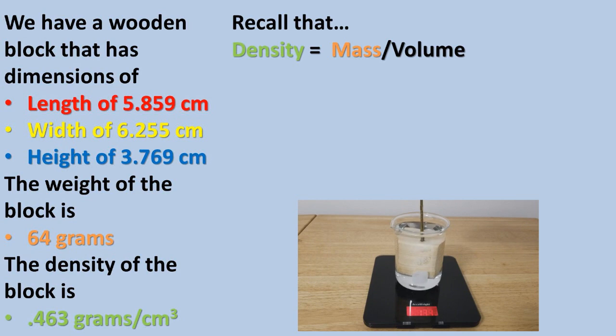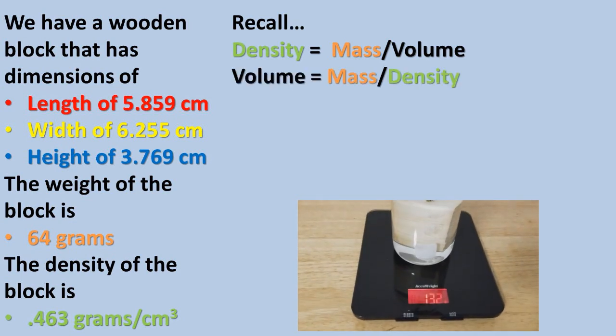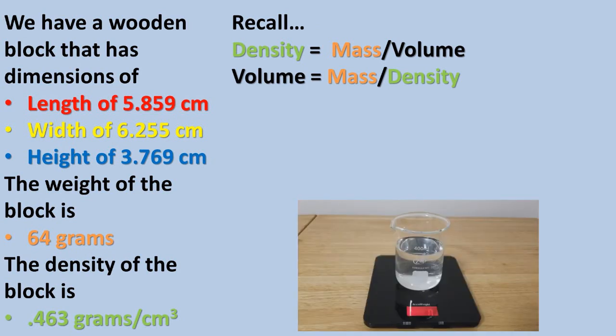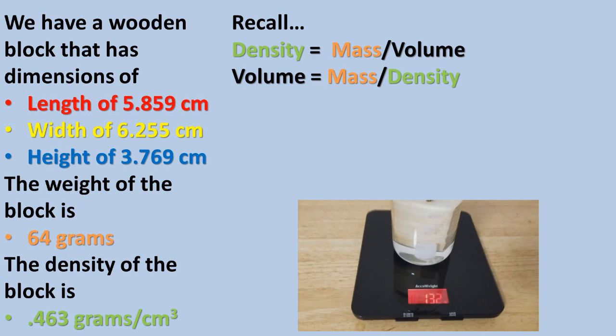Recall that density equals mass divided by volume. We want to find the volume of the block so we can find the total volume of water displaced by the block. So we will rearrange the formula to get volume to one side by taking mass and dividing it by the density to get the volume to one side.